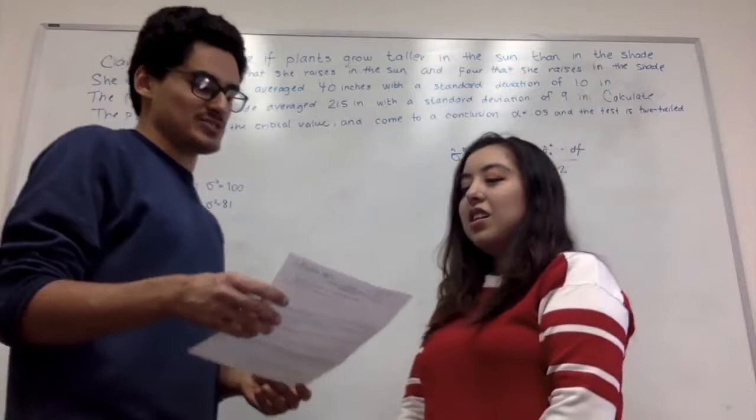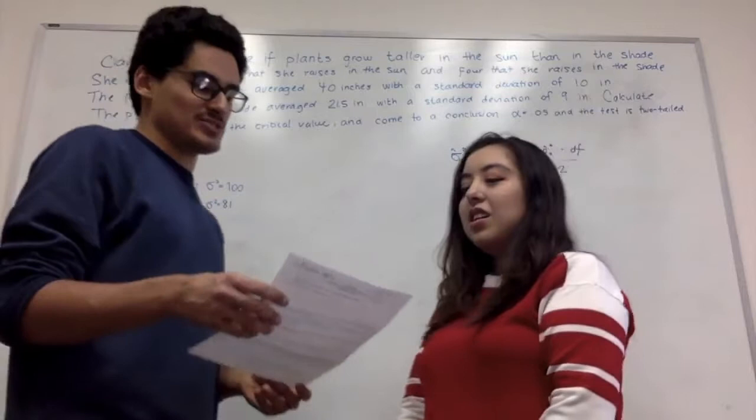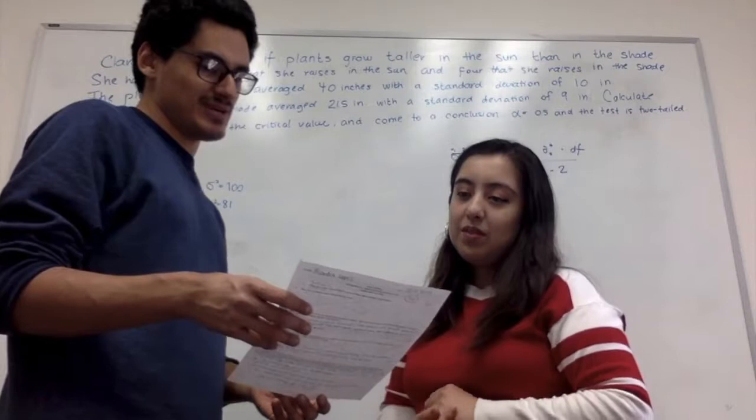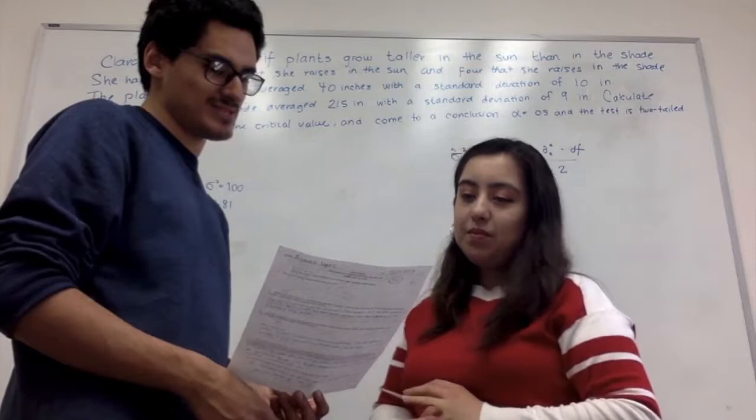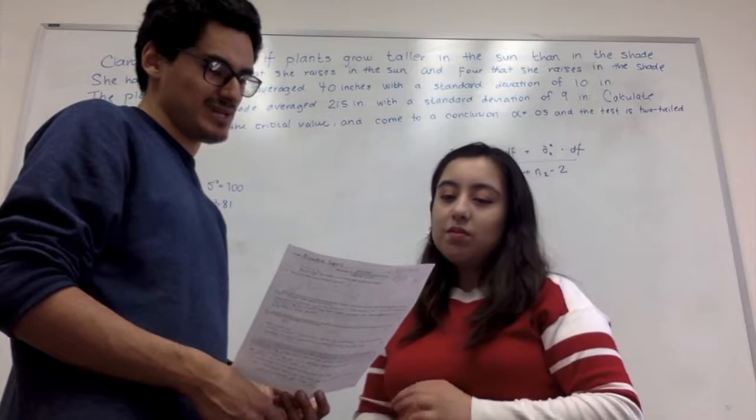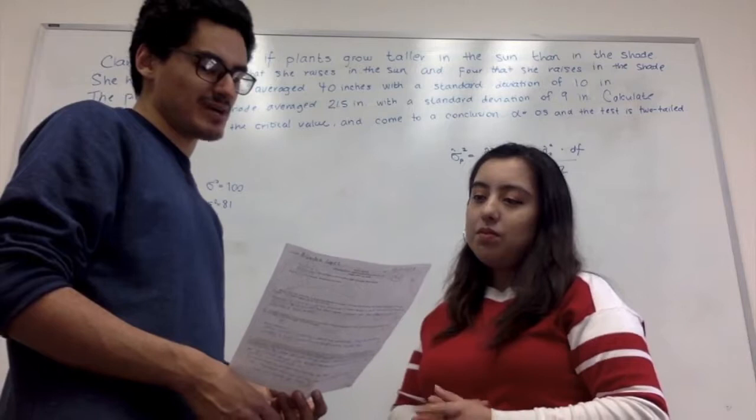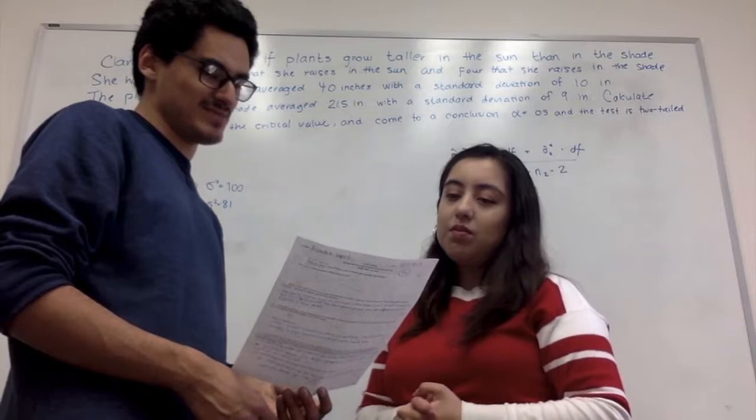So it's this question. Clara wants to test to see if plants grow taller in the sun than in the shade. She has three plants that she raises in the sun and four that she raises in the shade. The plants in the sun average 40 inches with a standard deviation of 10 inches. The plants in the shade average 25.5 inches with a standard deviation of 9 inches. Calculate the t-statistic, state the critical value and come to a conclusion about growing plants in the sun versus the shade. Let alpha be 0.05 and let the test be two-tailed. Show our work.